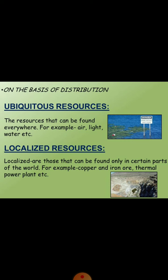On the basis of distribution — Ubiquitous resources: These resources are found everywhere, like the air we breathe. Localized resources: Resources like metals, minerals and precious stones found only in many places are called localized resources. For example, crude oil is found in some parts of the world like the Arabian Peninsula and the Assam region of India.